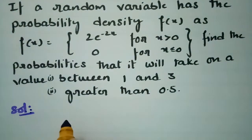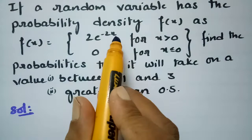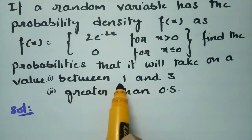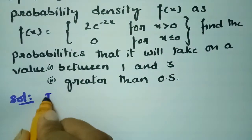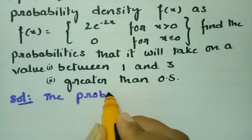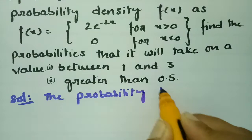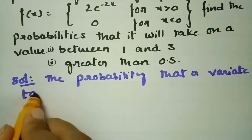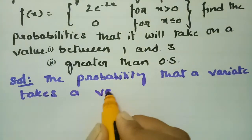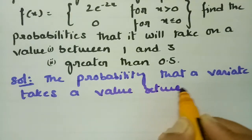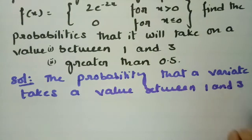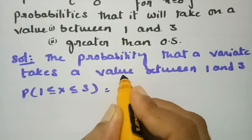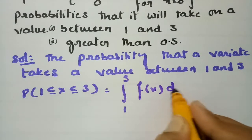The function is given as f(x) = 2e^(-2x) for x positive. We have to find the probability that a variate takes a value between 1 and 3, that is P(1 ≤ x ≤ 3), which equals the integral from 1 to 3 of f(x) dx.